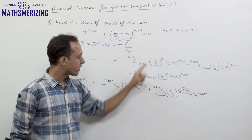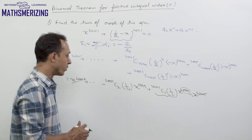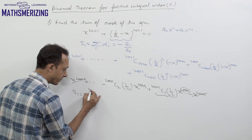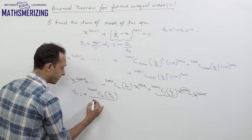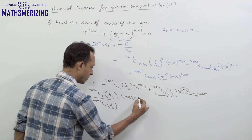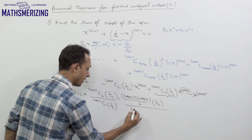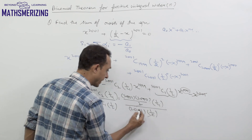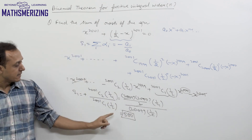Now, a_naught is 2001C1 times 1/2, and a1 is minus 2001C2 times 1/4. So the sum of all the roots equals minus a1 over a_naught. Since a1 is negative, minus times minus gives plus, so it's 2001C2 times 1/4 divided by 2001C1 times 1/2. Writing this out: (2001 times 2000 divided by 2) times (1/4), divided by (2001 times 1/2). The 1/2 and 2001 cancel, giving 500. So the sum of all the roots of this equation is 500.